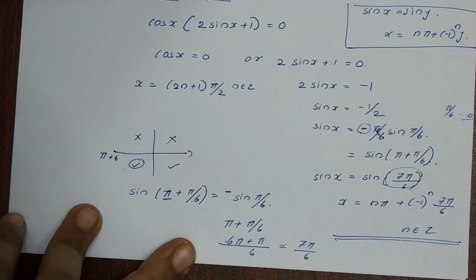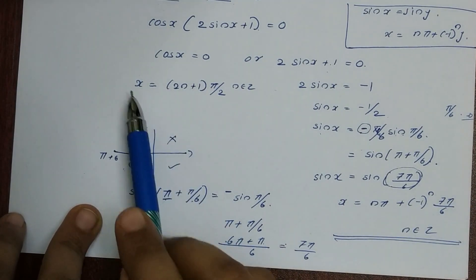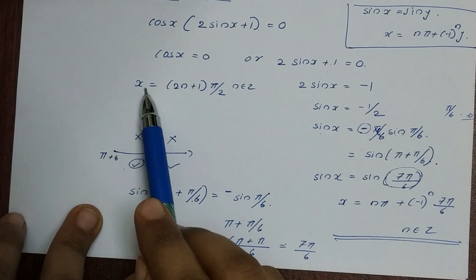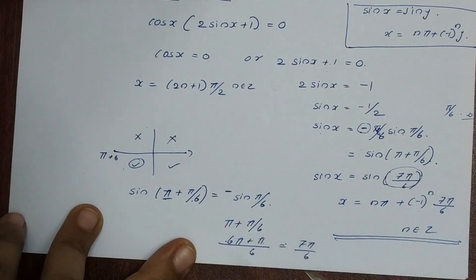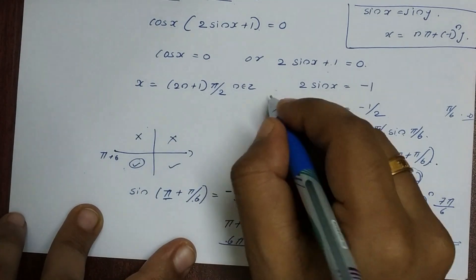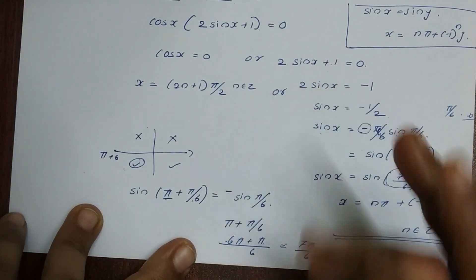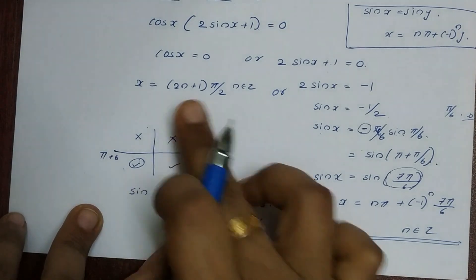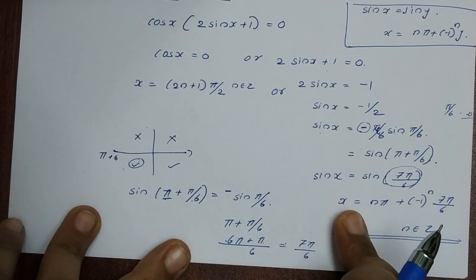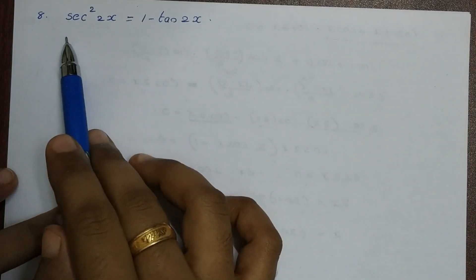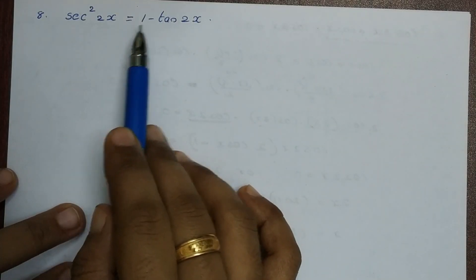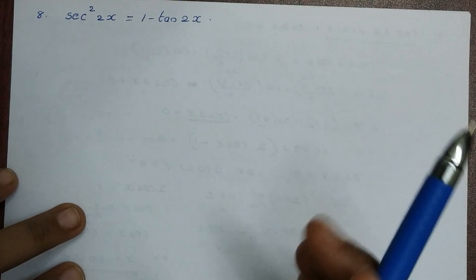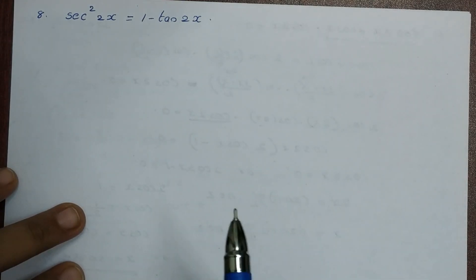This is the general solution for problem 7. The general solution is x equals (2n+1)π/2 or x equals nπ plus (−1)^n times 7π/6. Now moving to the 8th problem: sec²2x equals 1 minus tan2x.